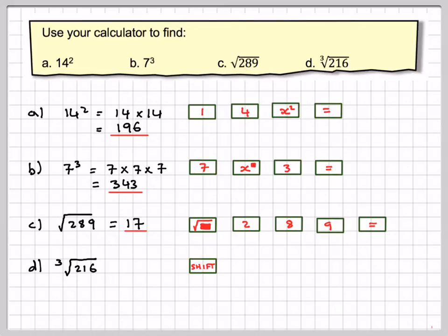So that's the cube root button, which is above the square root button, so that's going to be 216, and then press equals, and then we get the answer 6.